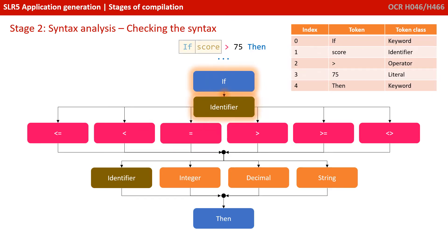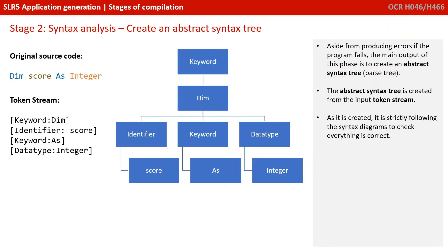Here's a more complex version: if score is greater than 75 then. Again, we're just following a valid path through a predetermined structure. The keyword if must be followed by an identifier, then a comparison operator, then an identifier or an integer, decimal or string, and finally the keyword then. We've followed through and this is a syntactically valid line of code. The main output of this phase of compilation is to create an abstract syntax tree or parse tree, created from the original input token stream from the lexer, strictly following the syntax diagrams to check that everything is 100% correct.